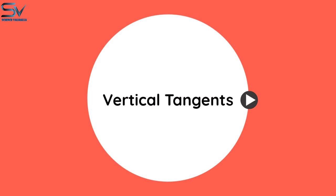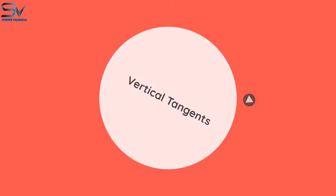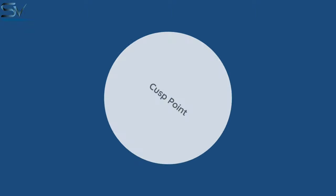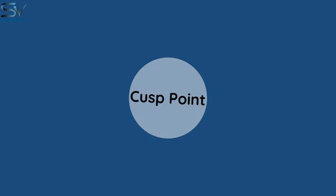In the previous video, we used the limit concept to solve the tangent line slope. In this video, we will extend the definition of tangent lines to allow for vertical tangents. And second, we will know what the cusp point is. Let's get started.